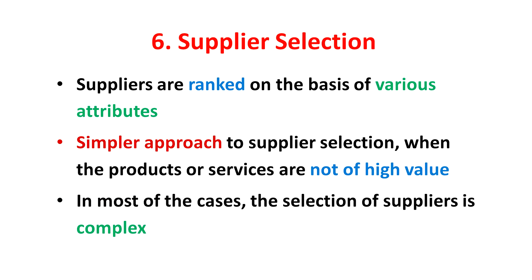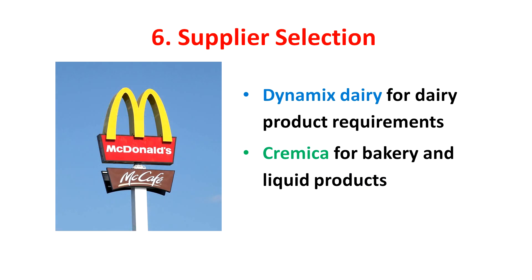The sixth stage is Supplier Selection. Just like the evaluation of alternatives, suppliers are ranked on the basis of various attributes. Sometimes companies may use a similar approach when products or services are not of high value. But in most cases, the selection of a supplier is very crucial and complex. In the case of McDonald's in India, the selection of suppliers for dairy and bakery products was not easy. After extensive quality checks and deliberations, they selected Dynamics Dairy for dairy products and Crimica for bakery and liquid products.